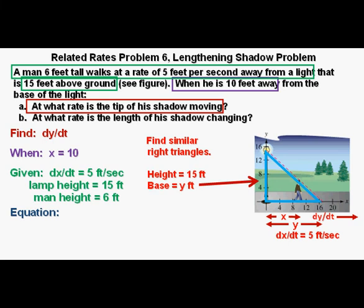And for the second smaller red right triangle, which is similar to the first blue triangle, we have the height equal to the height of the man, 6 feet. And the base of the triangle is y minus x feet.